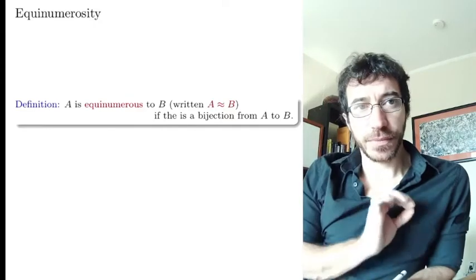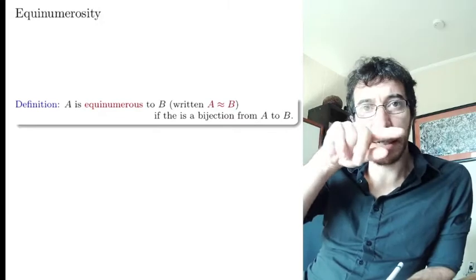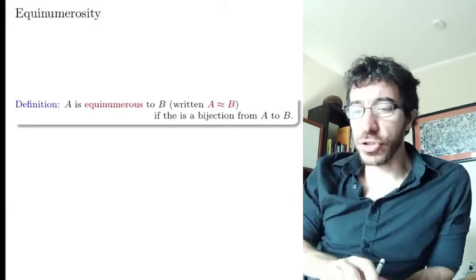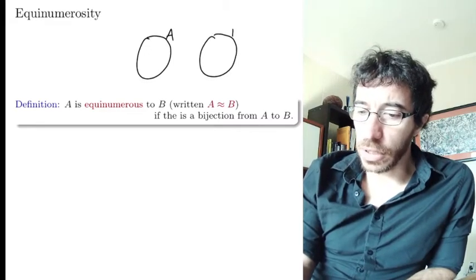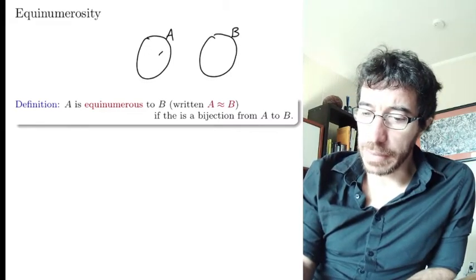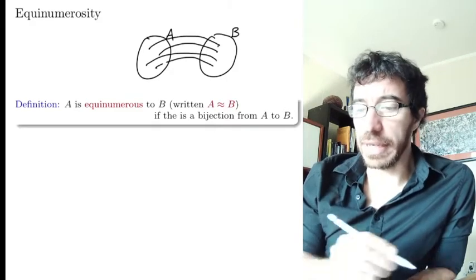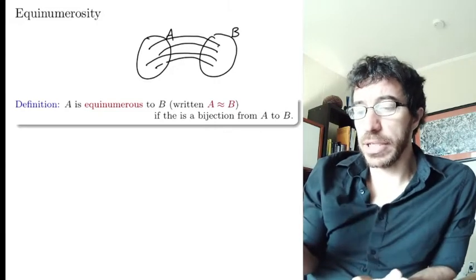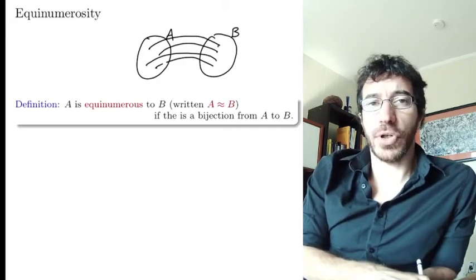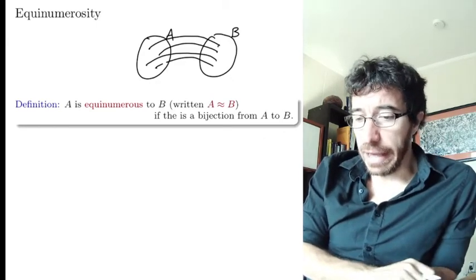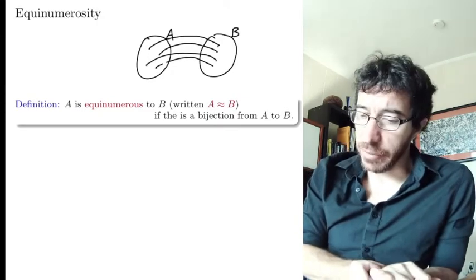We say that two sets A and B are equinumerous, written A ≈ B, if there is a bijection between A and B. That means there is a one-to-one correspondence between each element of A and each element of B — every element of A is matched to every element of B. Whenever you have a bijection like that, you say that they are equinumerous. This makes a lot of sense for finite sets, and for infinite sets that's what we're going to use to say they have the same size.